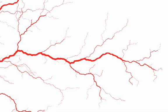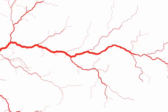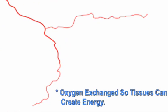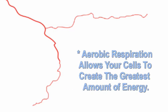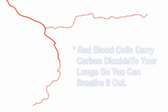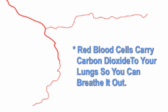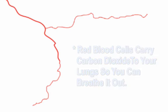In this picture, I'm showing you an artery that branches off into arterioles, which branch off into capillaries. Let's start at the capillary level. This is where oxygen is exchanged, so that your tissues can create energy. When oxygen is used, it's called aerobic respiration. This allows your cells to create the greatest amount of energy, and the waste products are water and carbon dioxide. Your red blood cells pick up the carbon dioxide and carry it to your lungs, which you breathe out. Everything is working great.